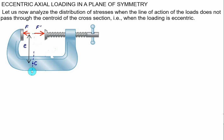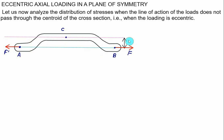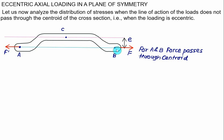Since this force is not passing through the centroid, we have to do the FBD — show the action and reaction at point C and then analyze the stress. Let's consider a bent bar and define two points, A and B. Two forces pass through the centroid: force F and corresponding force F prime. At point C we want to calculate the stresses, and point C is at an eccentric distance equal to E from line AB. E is called the eccentricity.